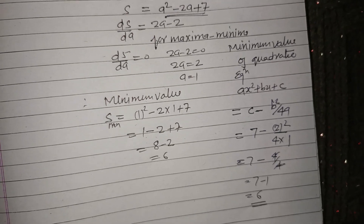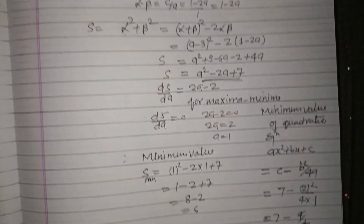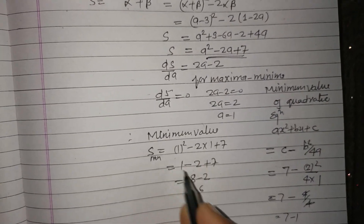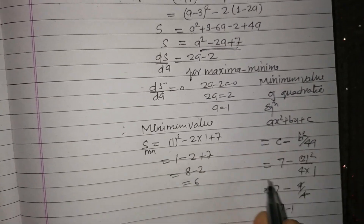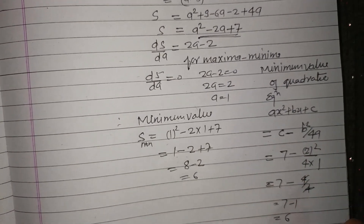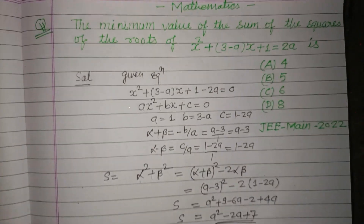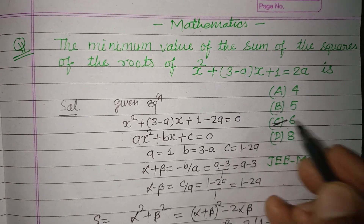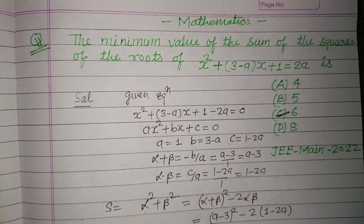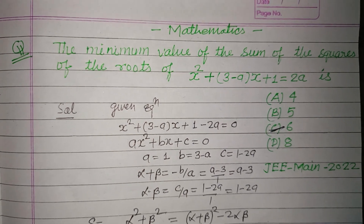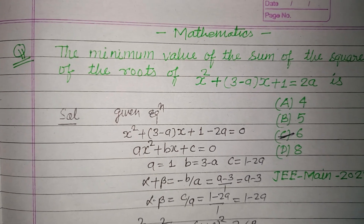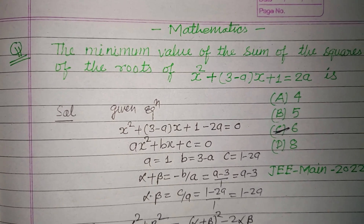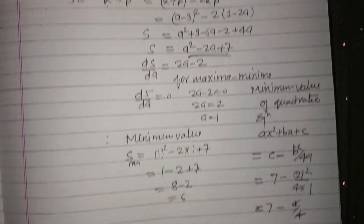So 6 is the correct answer, confirmed by both the differentiation method and the quadratic minimum formula. The answer is option C. I hope you got it — please like the video and subscribe to the channel. Thanks for watching.